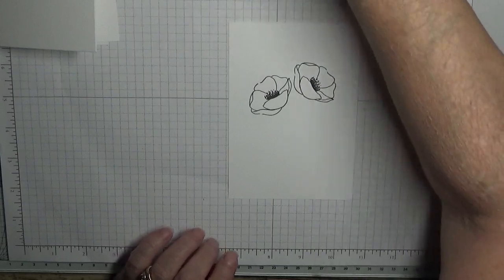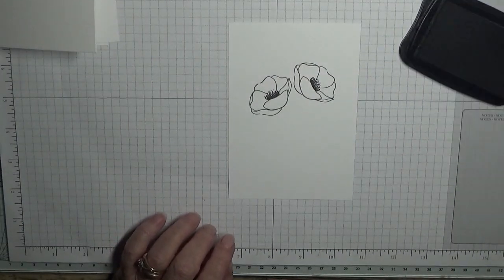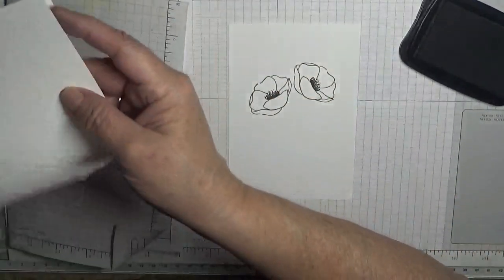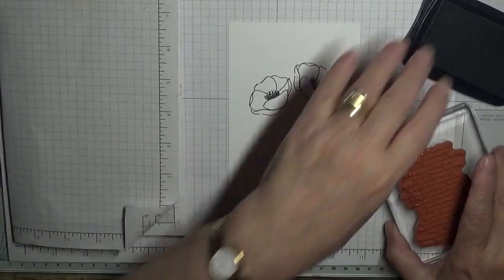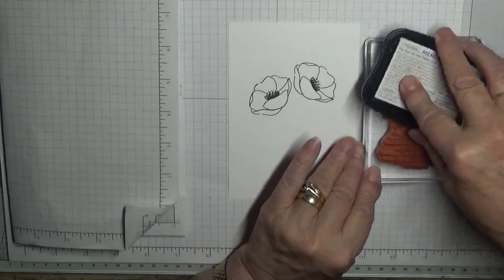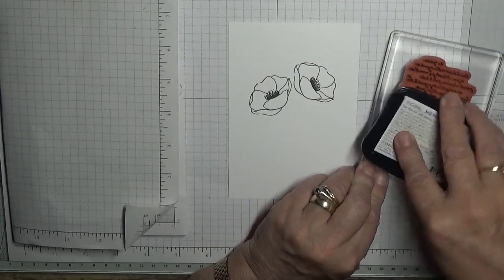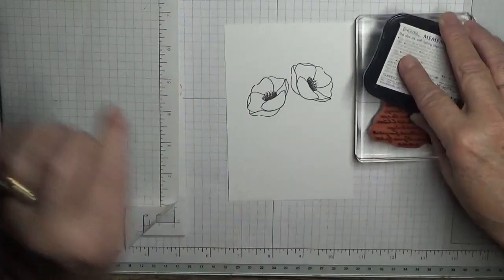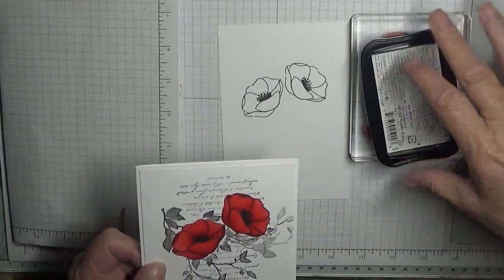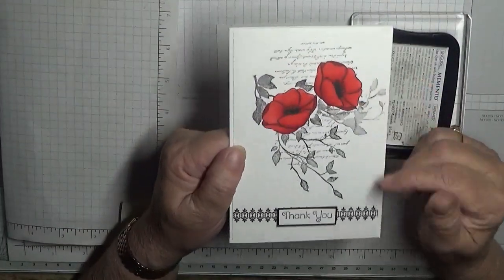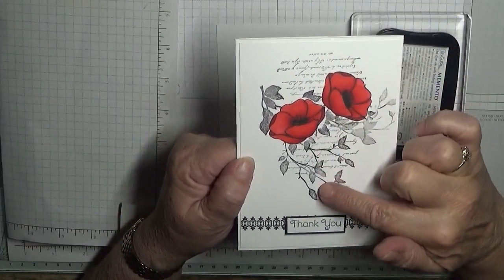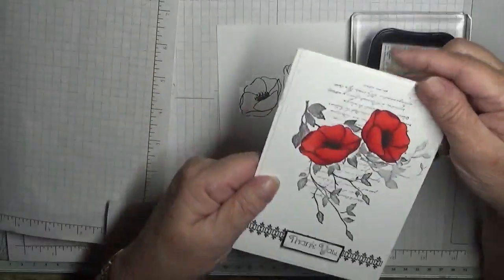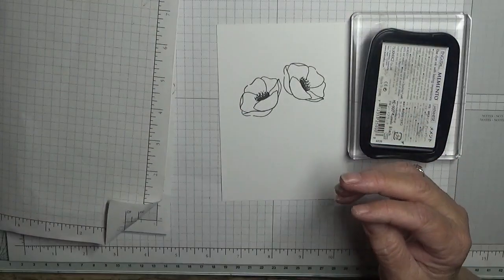Alright we'll put that one away and we'll bring memento black ink and a scrap piece of paper. Let's put these out of the way. And with the script we're going to ink it up. Oh if you noticed, oh you might not noticed, and I only noticed today when I was getting ready to film, I actually stamped the script on this one upside down. So this time I'm going to try and stamp it the right way up.